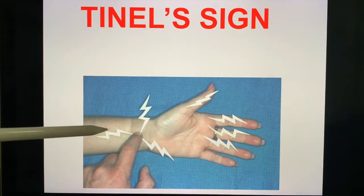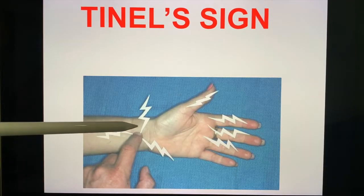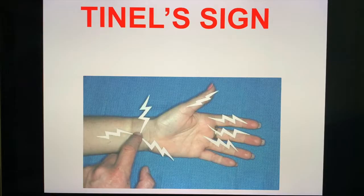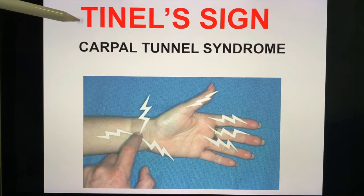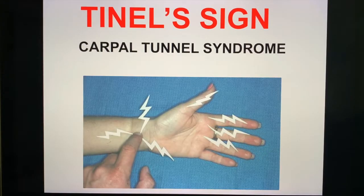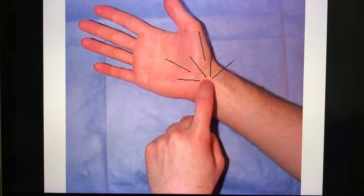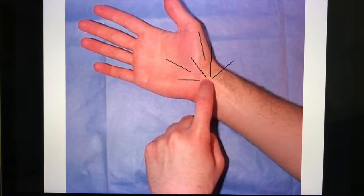If you tap the area where the median nerve should be, you're going to get numbness, tingling, paresthesia, or pain running down the distribution of the median nerve. This is your Tinel sign, diagnostic of carpal tunnel syndrome. Letter T — Tinel — is letter T to tap the median nerve. Here's another illustration showing you that physical exam finding.